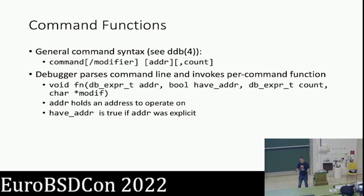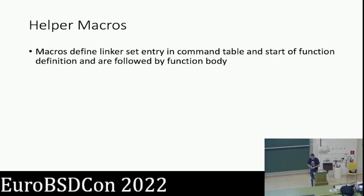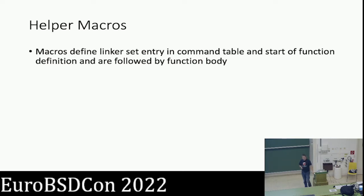have_addr tells you if an address was given, so you can choose whether to require one and treat it as a syntax error if none is provided. The modifier is the string of optional modifiers without the leading slash. The count is given as negative one if not specified, which is how you can tell if it's present. To declare these functions, there are helper macros that wrap some of this logic — syntactic sugar to make it slightly easier. They define a helper structure and use sysinits to dynamically register your command with DDB when your module is loaded, and unregister it when unloaded.